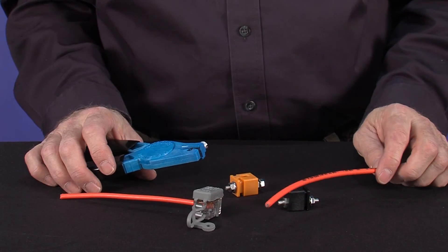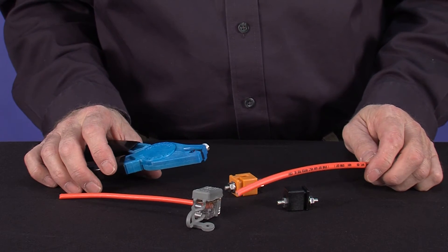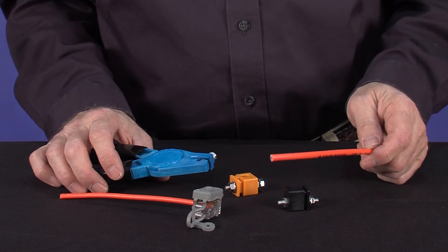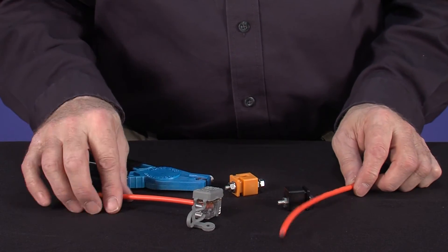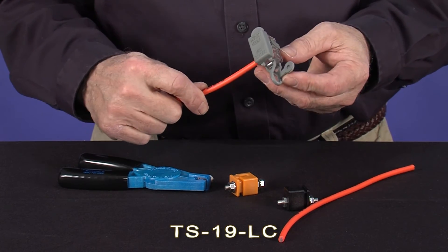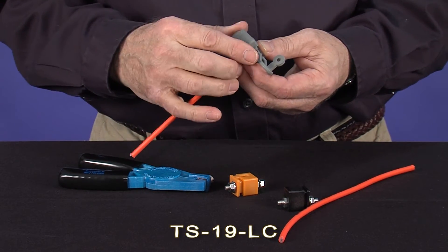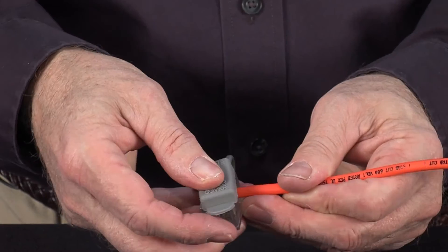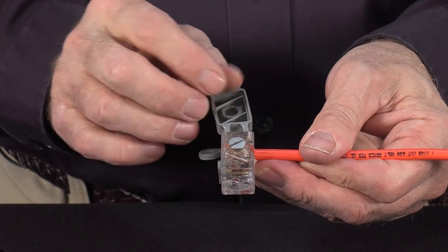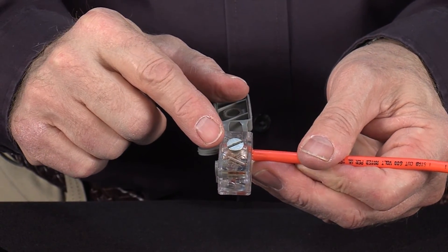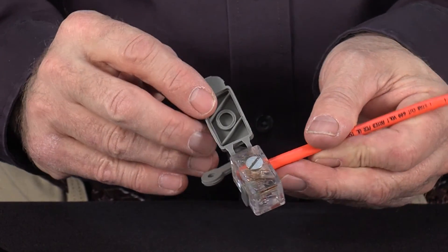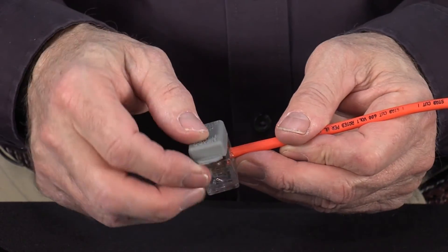The TraceSafe system also includes a variety of accessories, most of them designed to make it easier for you to locate your wire. Our locate clip, TS-19LC, can be used at the end, midline, or in a handhold, or in a service vault. It's installed the same way as other connectors. All you have to do to use it is open the cap, energize the stud, and locate your line.